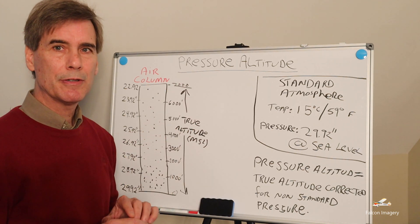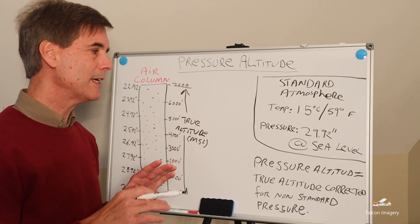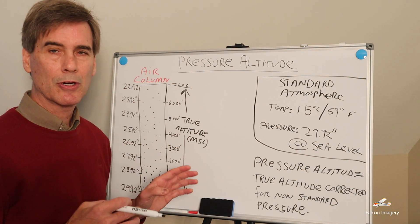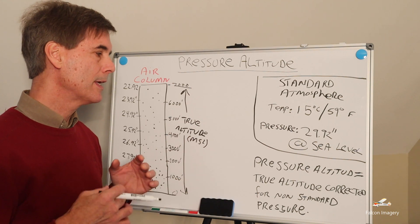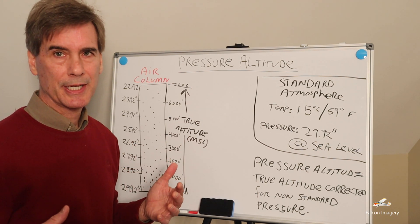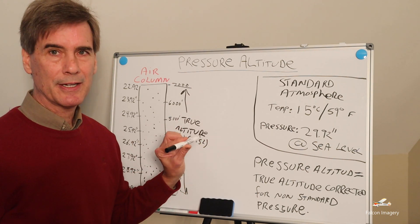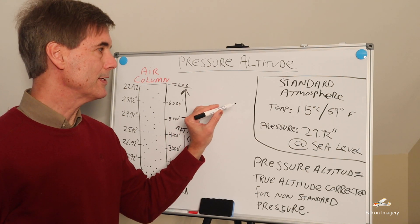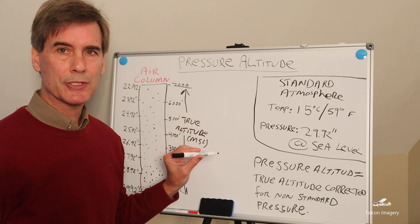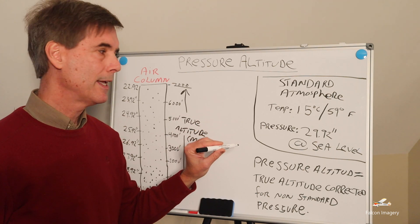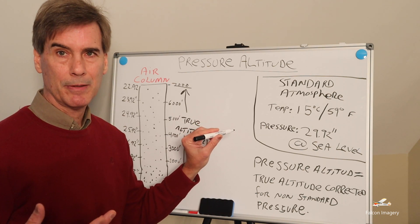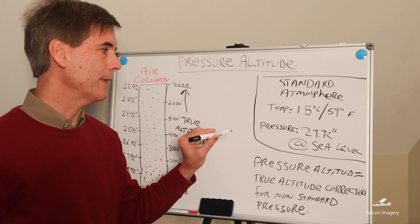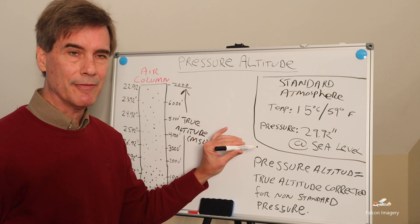So what is pressure altitude? The simplest definition is pressure altitude is the true altitude corrected for non-standard pressure. Standard atmospheric pressure — or standard atmosphere — is when the temperature is 15 degrees Celsius or 59 degrees Fahrenheit and the pressure on the barometer reads 29.92 inches of mercury. Again, this is at sea level.